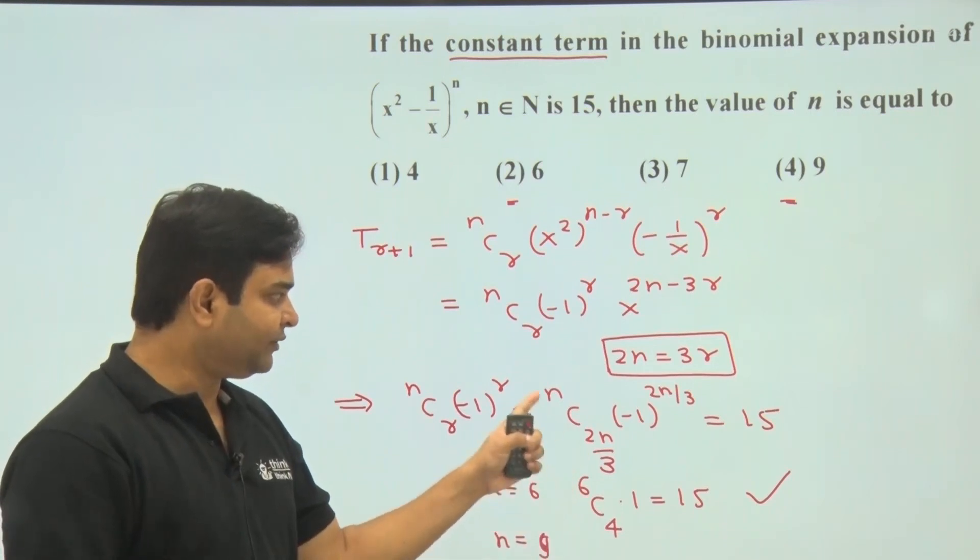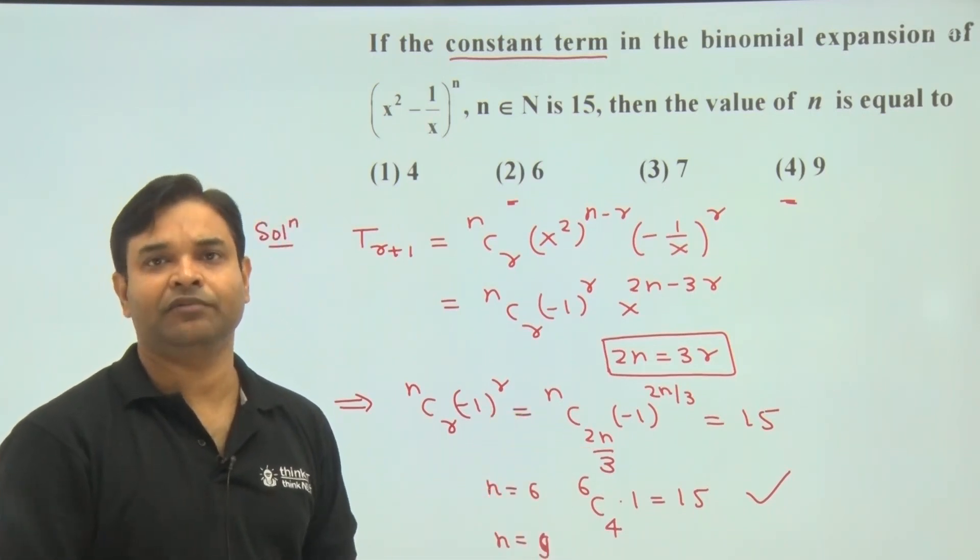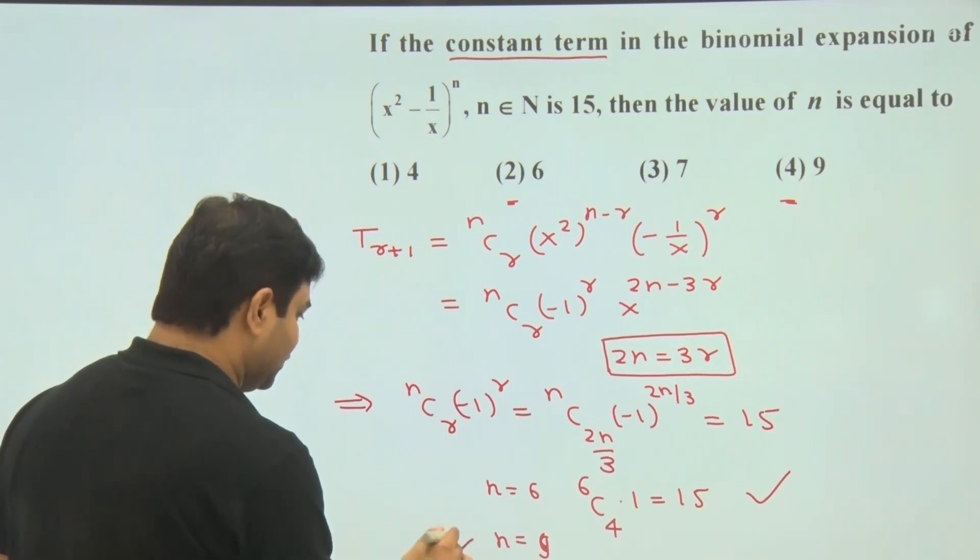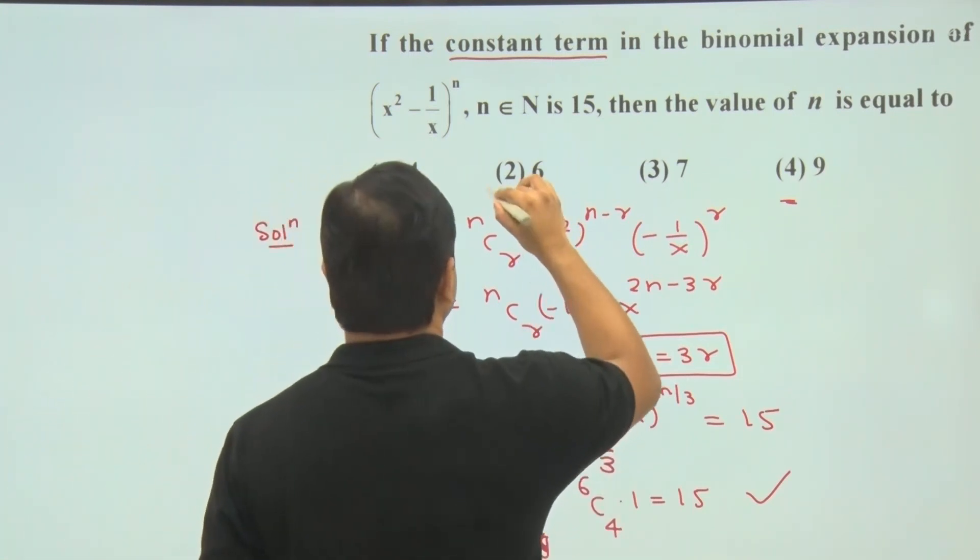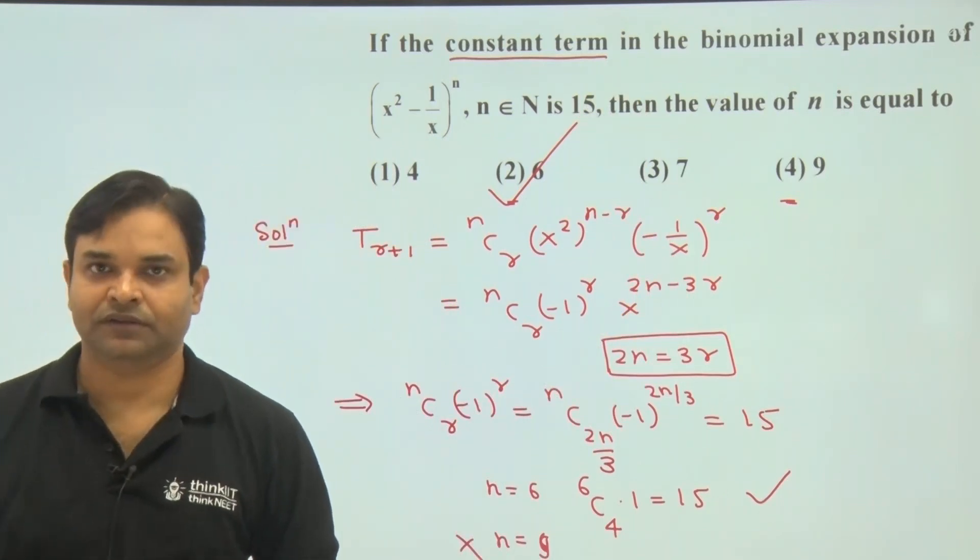Similarly, we can verify that n is equal to 9 is correct or not. But by putting n is equal to 9, we are getting 9C6, and 9C6 is not equal to 15. So this is wrong. N is equal to 6 is correct. Final answer is n is equal to 6, which is option 2. Thank you.